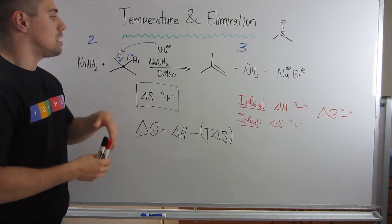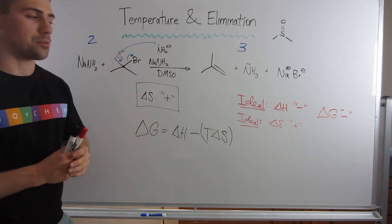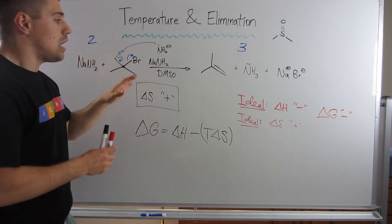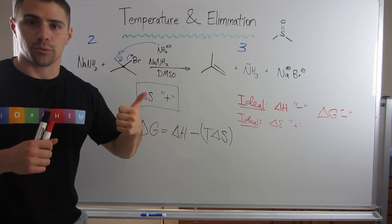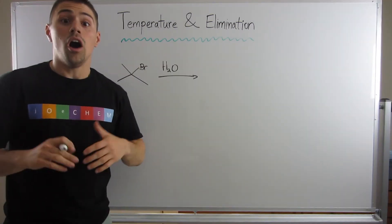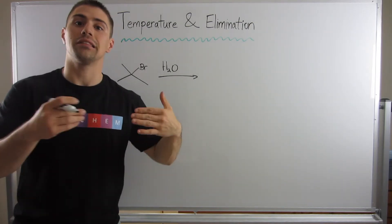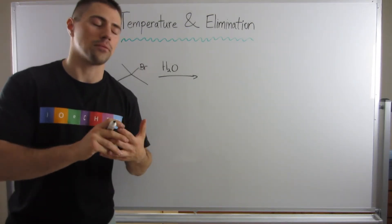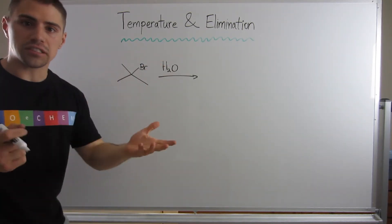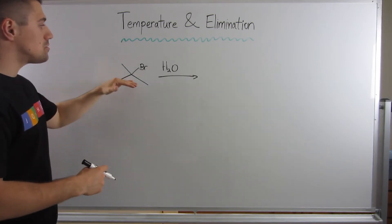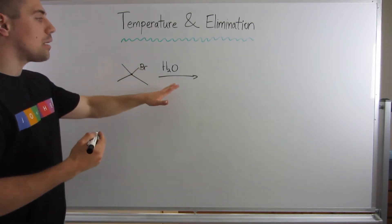We know E2, if you just have the right substrate, a good strong base, it's going to go to the elimination product. Here's one of the biggest ways you'll see temperature and elimination kind of interwoven with each other. Let's dissect what's going on in this reaction. Very similar to the one we just did, same substrate, tertiary, good leaving group. However, this time we just have plain old water over the arrow.